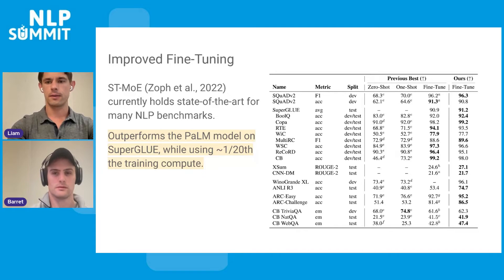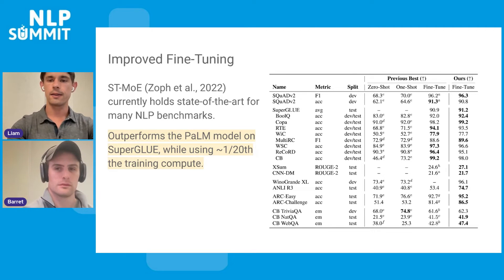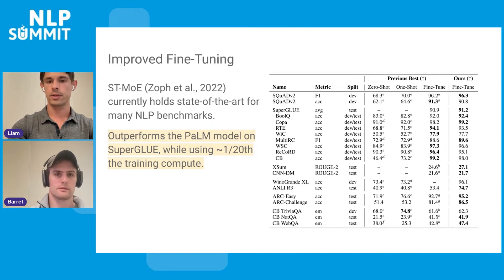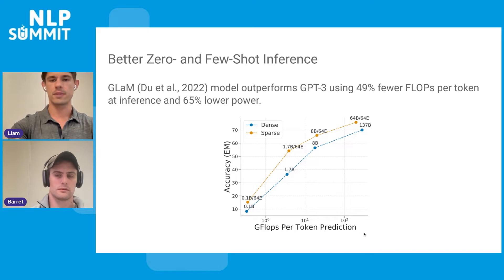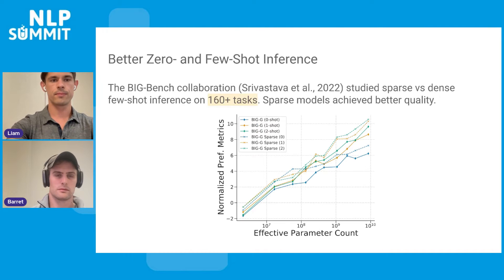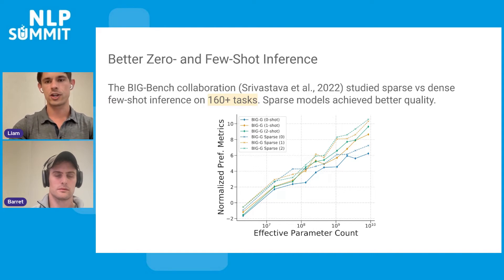Second, fine-tuning is dramatically improved. A sparse expert model currently holds many NLP benchmark state-of-the-arts, and interestingly, it outperforms larger dense variants such as PaLM while using only 1/20th of the compute. There has also been strong performance from GLaM and others in 2022 showing better zero- and few-shot performance. The sparse model, shown in the yellow curve, outperforms on accuracy for FLOPs per token across many different model sizes. This is corroborated in Big Bench, a collaborative community effort, which found sparse models on few-shot inference outperforming over a set of 160 community-contributed tests.